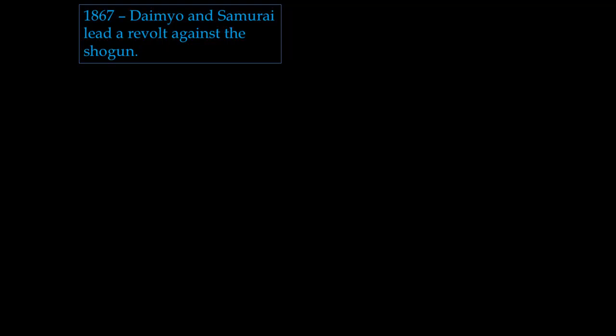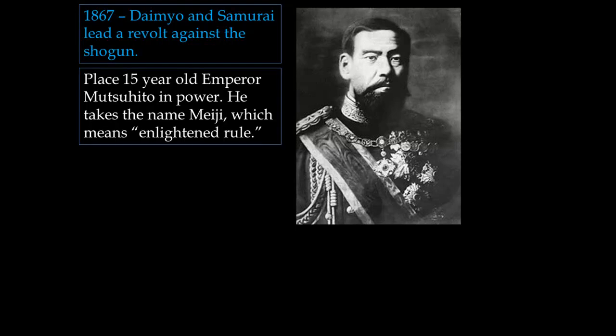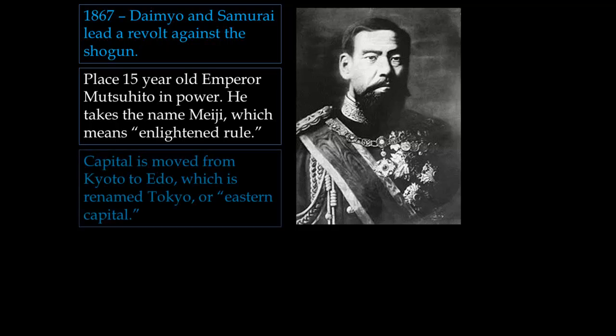In 1867, the daimyo and samurai of Japan led a revolt against the Tokugawa Shogun and placed 15-year-old Emperor Mutsuhito in power. He took the name Meiji, meaning 'enlightened rule.' They moved the capital from Kyoto, the historic capital, to Edo — where the Shogun had lived — and renamed it Tokyo, meaning 'Eastern Capital.'